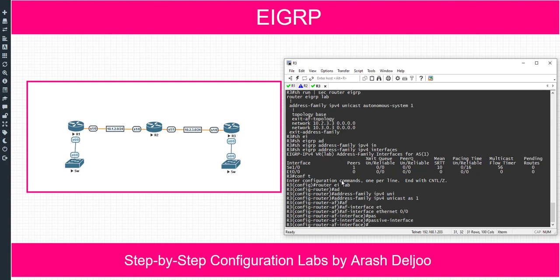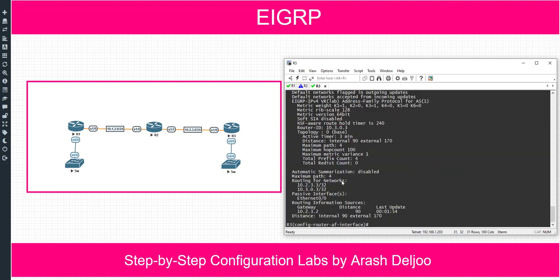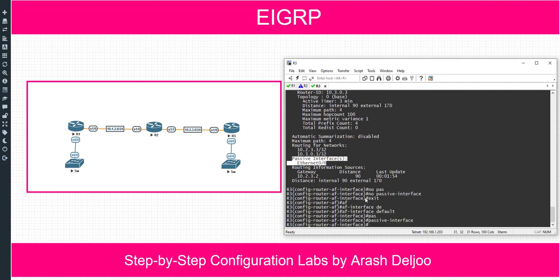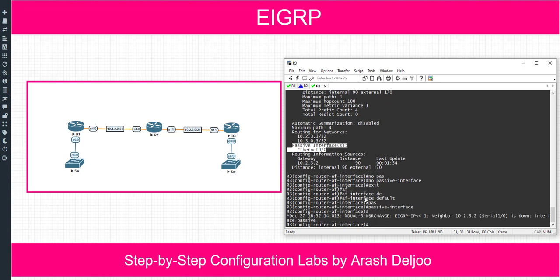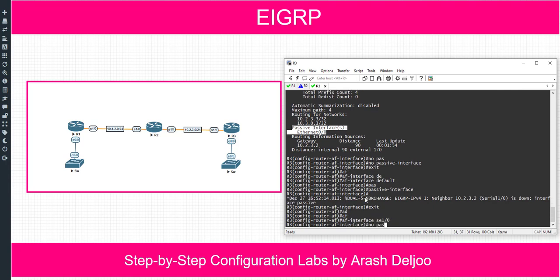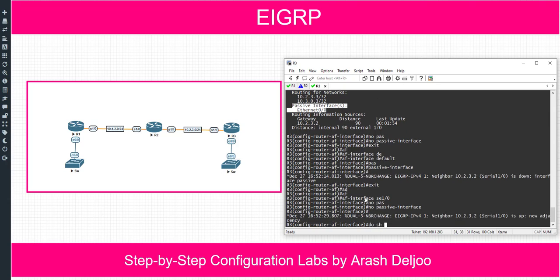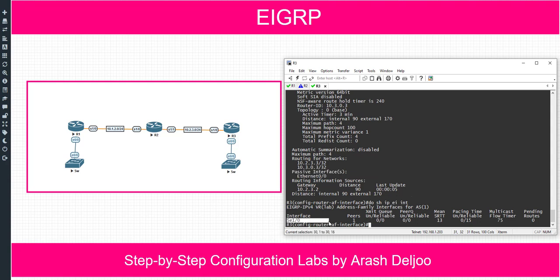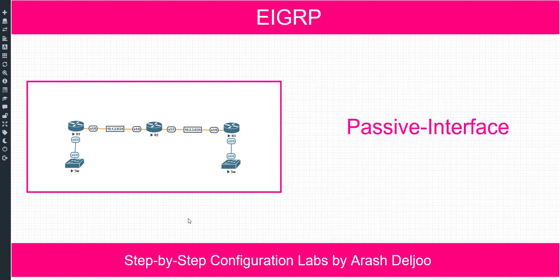After configuring passive on af-interface eth0/0, 'show ip protocols' confirms eth0/0 is passive. Remove it with 'no passive-interface'. For the second method, use 'af-interface default' and then 'passive', which applies to all interfaces — the neighborship drops. Then go to 'af-interface serial1/0' and configure 'no passive-interface' to restore the neighborship. 'Show ip protocols' confirms only eth0/0 is passive, and 'show ip EIGRP interfaces' shows only serial1/0 is active — confirming eth0/0 is passive. That's how to configure EIGRP passive interface.